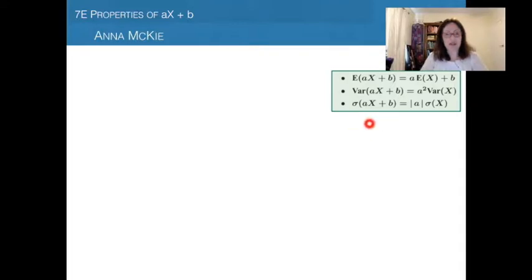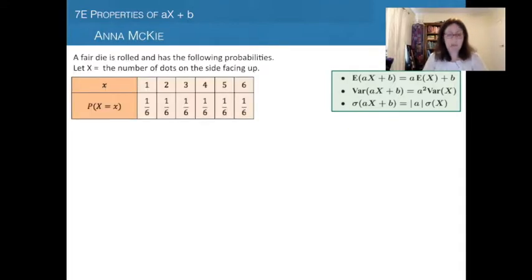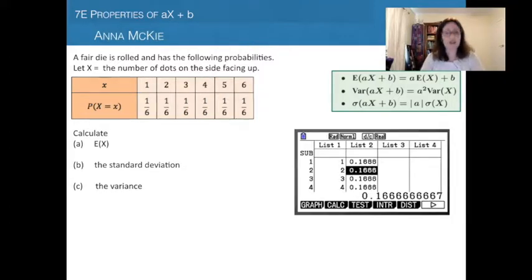I'm going to leave those facts up in the corner here and we're going to do one example with a couple of parts. Classic example: we're rolling a die with a 1 in 6 chance of each scenario happening, where X is the number of dots on the side facing up. We're asked to calculate the expected value, which is essentially our average or mean.